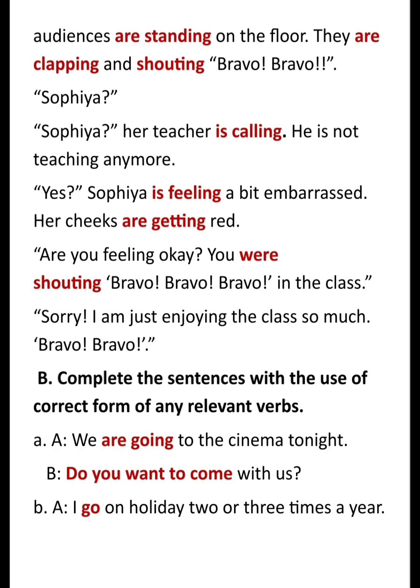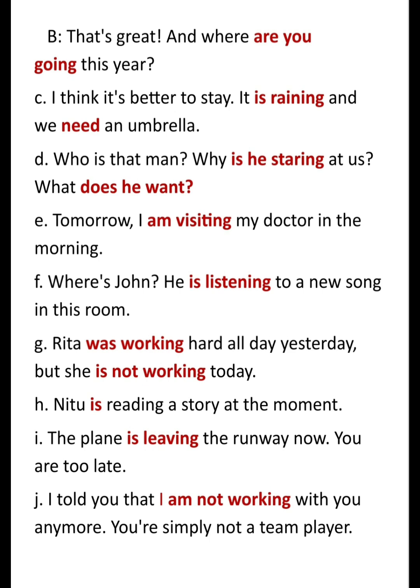B. Complete the sentences with the correct form of any relevant verbs. A. We are going to the cinema tonight. Do you want to come with us? B. I go on holiday two or three times a year. That's great. And where are you going this year?